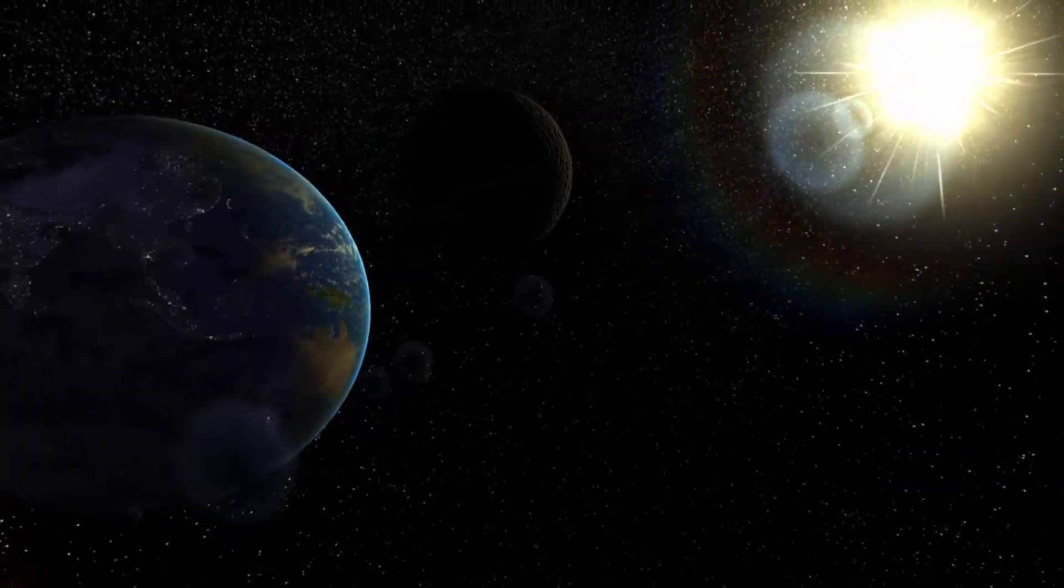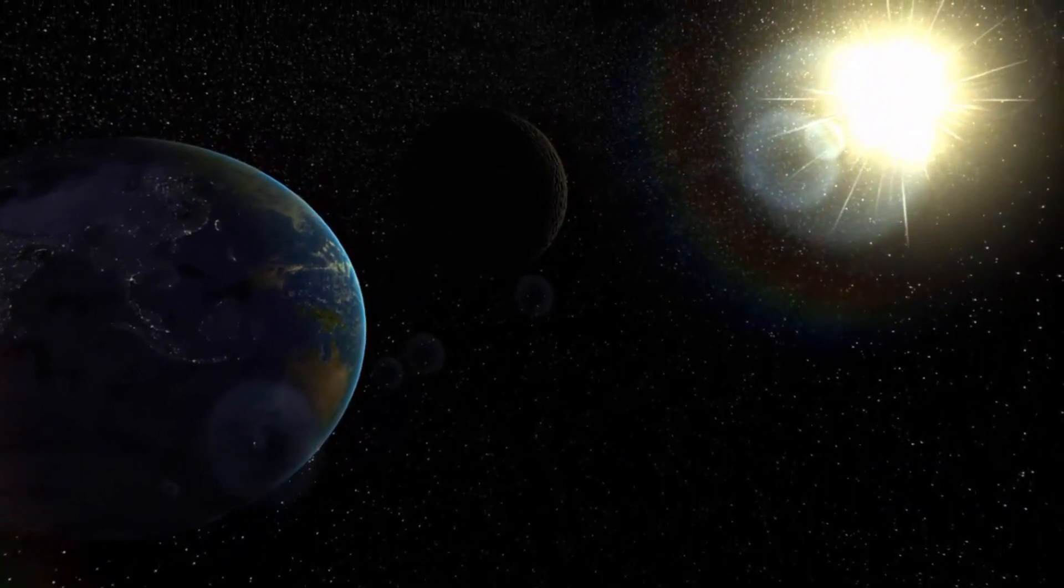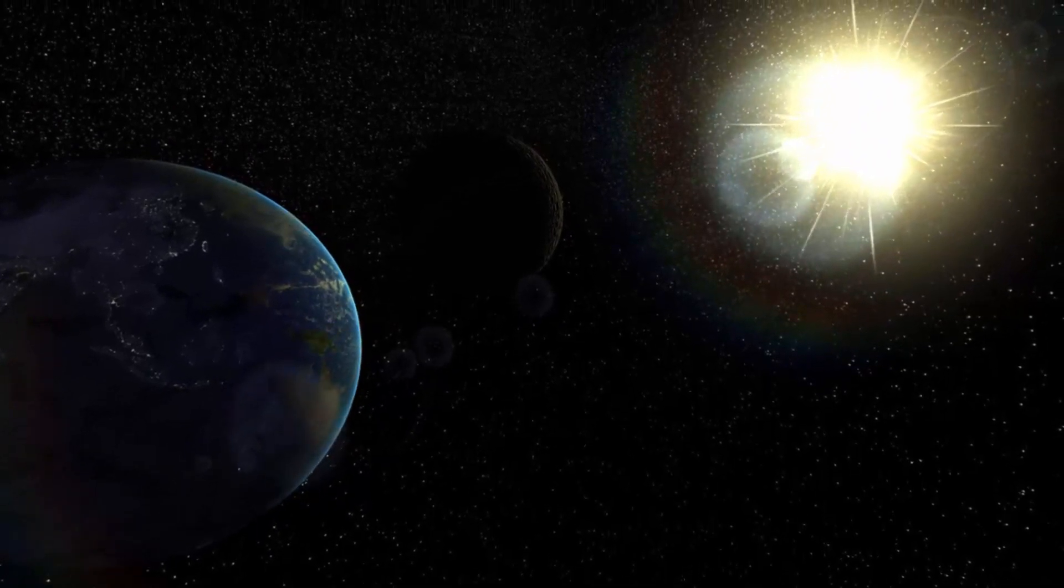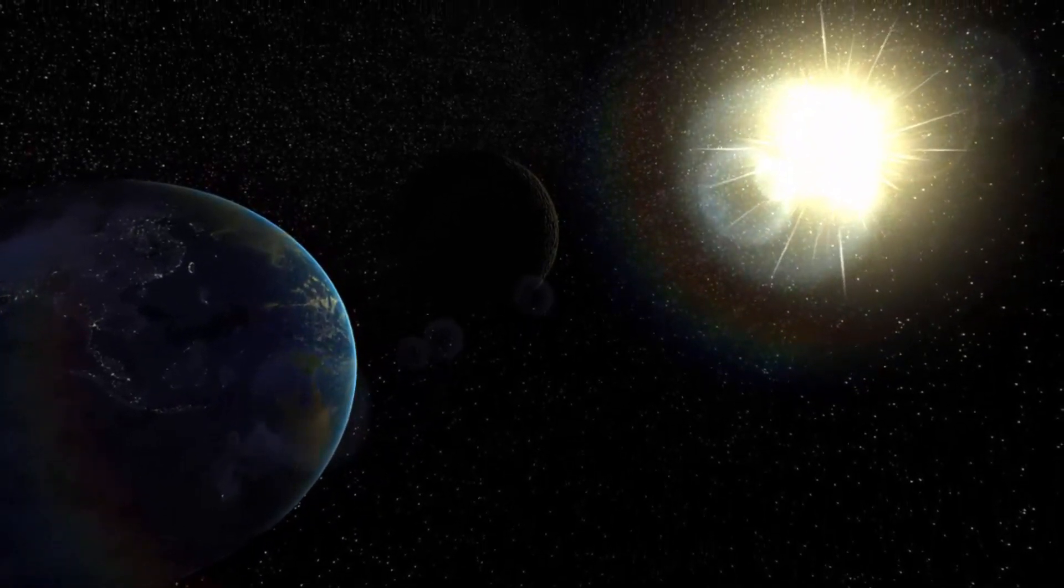It will come within just 0.034 astronomical units of our planet. One astronomical unit is the distance between the Earth and the Sun, so the asteroid will be 5 million kilometers away from our planet, which is safe.